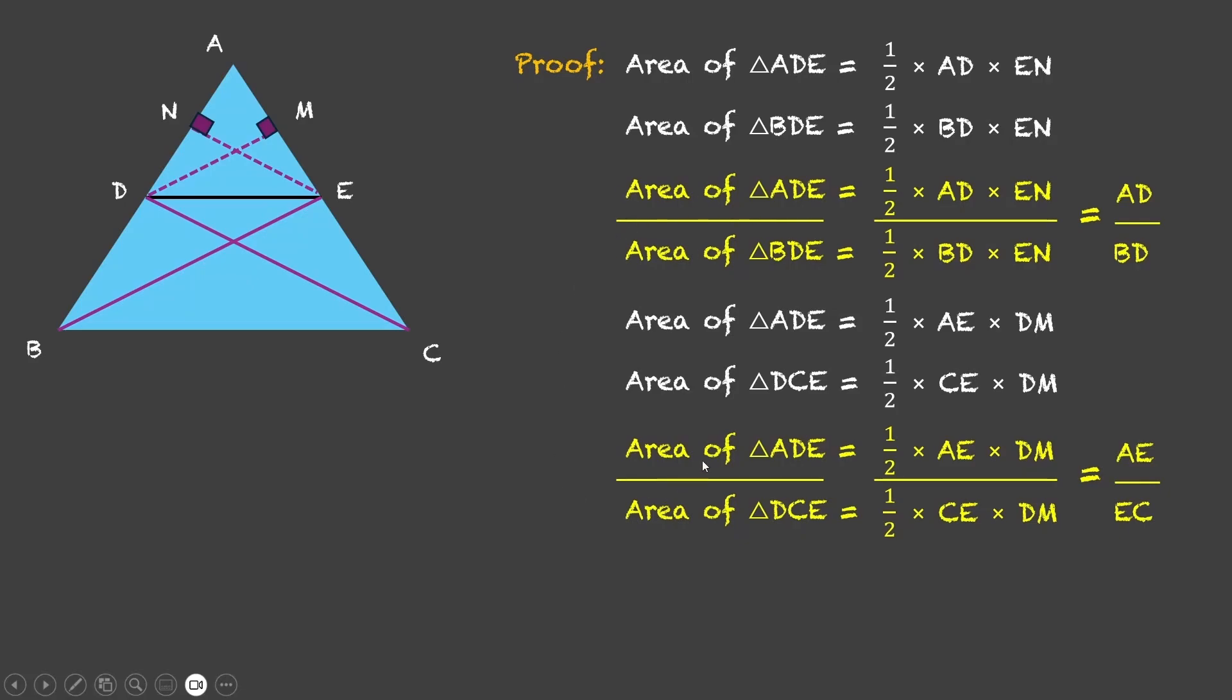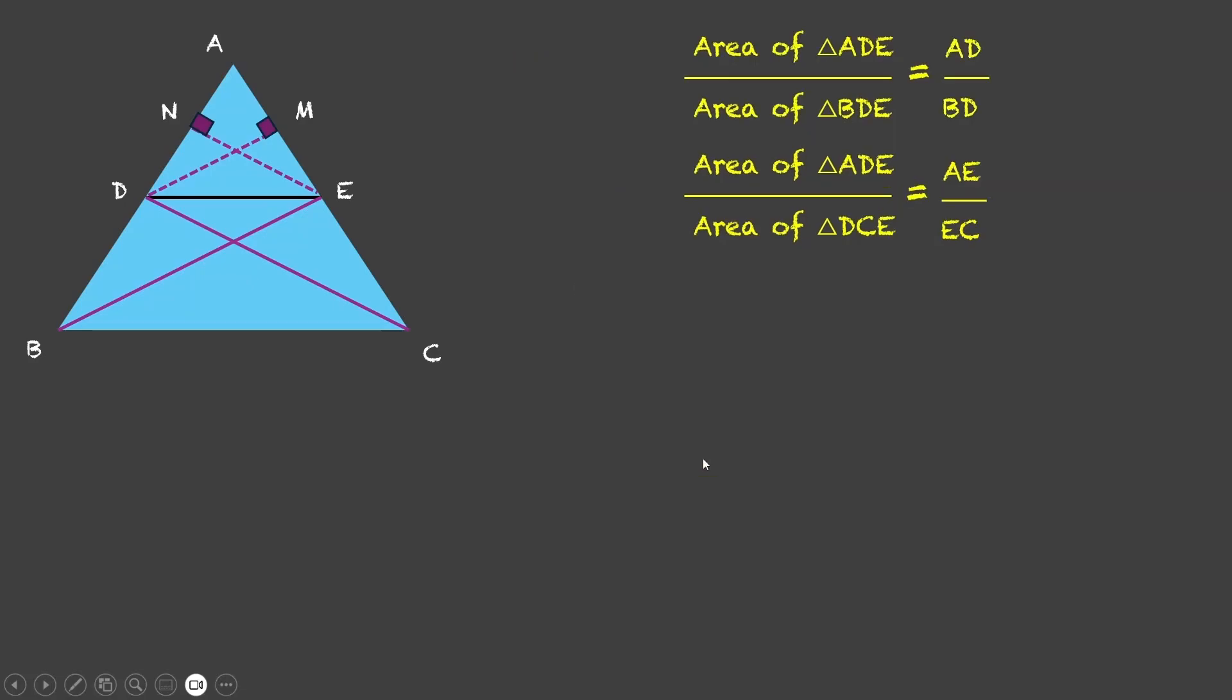Let us write this equation and this equation on a cleaner page over here. Now, we have two equations. Let's call them equation 1 and 2. In both of these, on the left hand side, the numerator is same. The denominator is area of BDE. In this case, it's area of DCE. That is, this triangle and this triangle. Actually, the area of both of these triangles is equal.